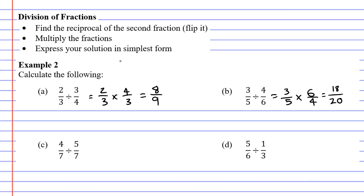The third dot point said we should express our solution in simplest form, which we can do. 18 over 20 can be halved, giving us 9 over 10.